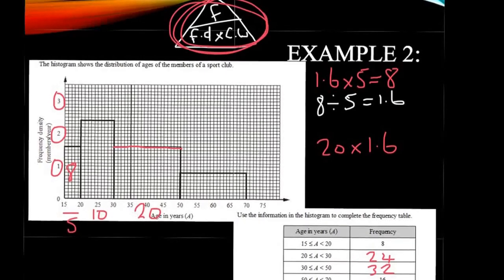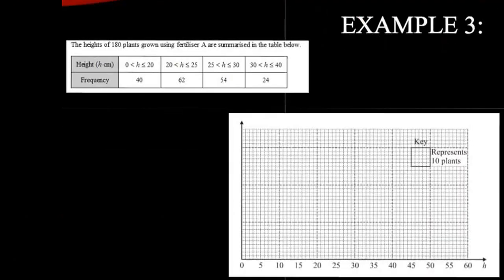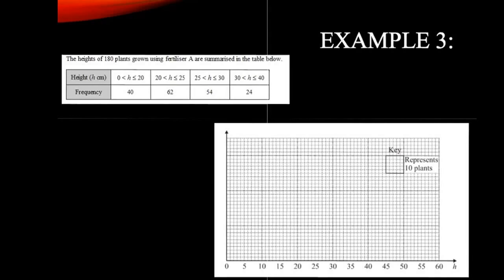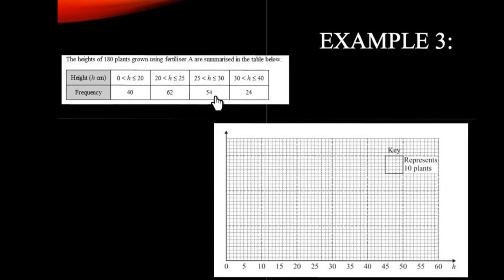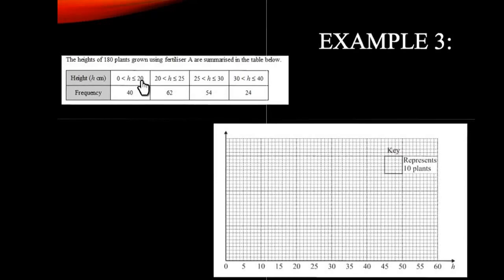In this final example we're going to actually draw a histogram. We've been told that the heights of some plants grown using a fertiliser have been measured: between 0 and 20 there were 40; between 20 and 25, 62; 25 to 30, 54; and between 30 and 40, 24. Also notice the inequality signs — if something was exactly 20 centimetres it would go in the first box, because the height here is less than or equal to 20. As soon as it goes a millimetre over 20 we move to the next box. This is how we represent continuous data using inequality signs.